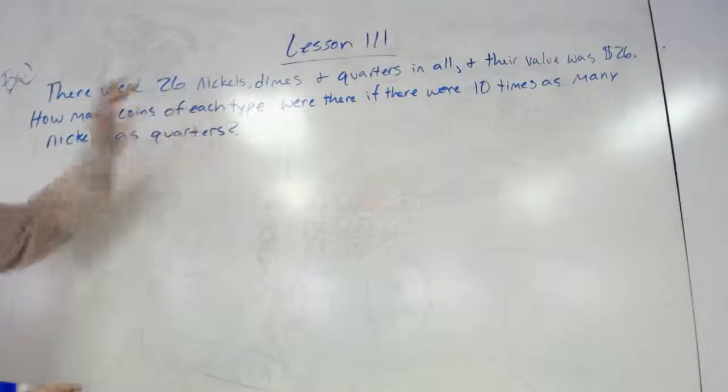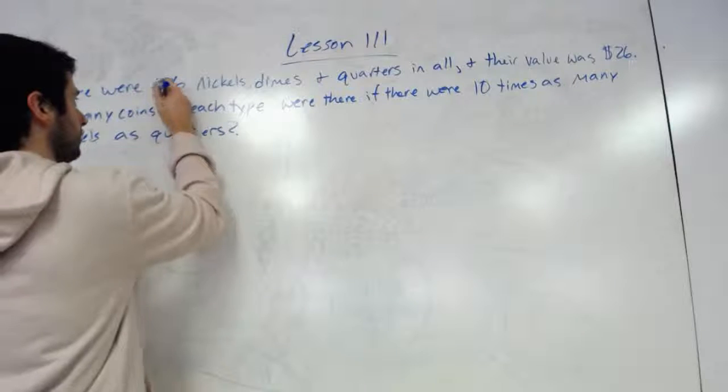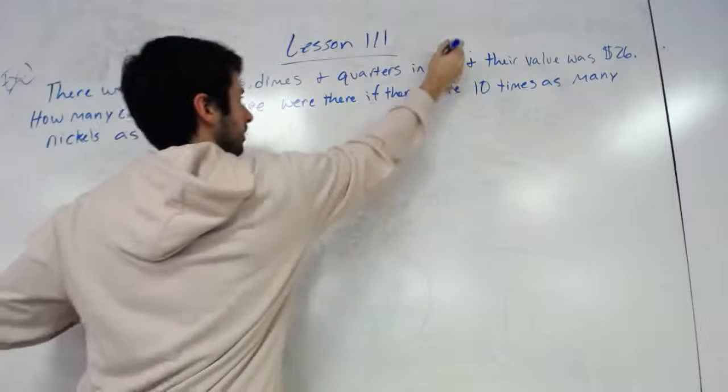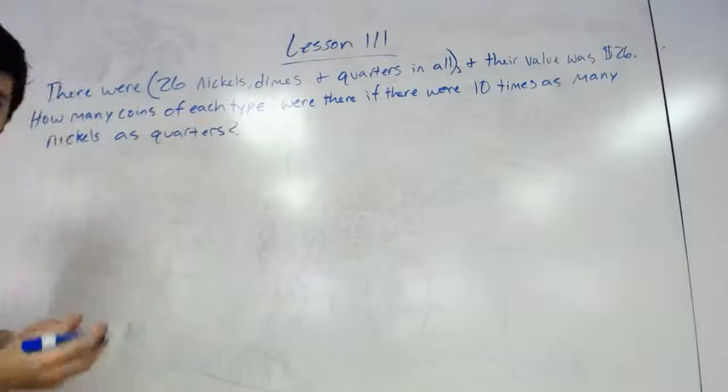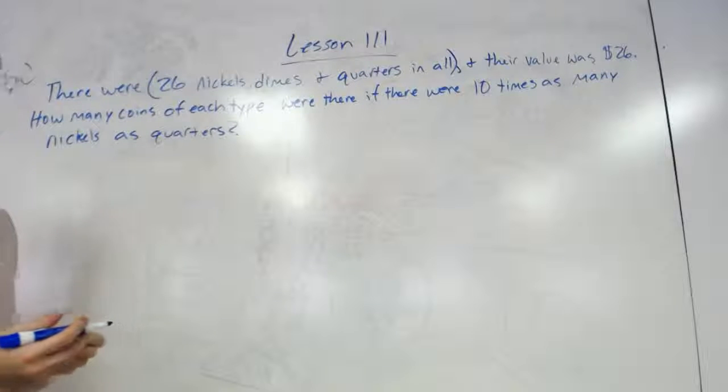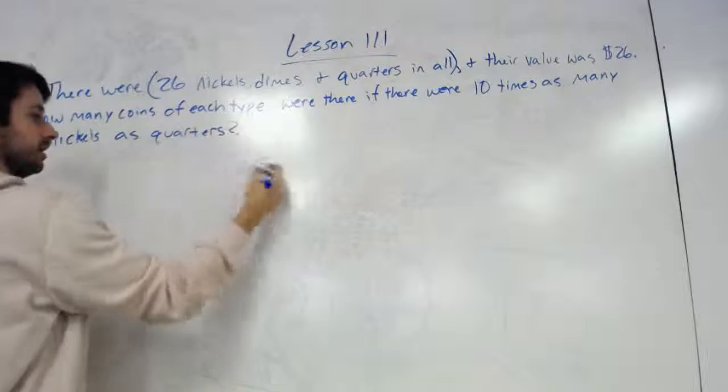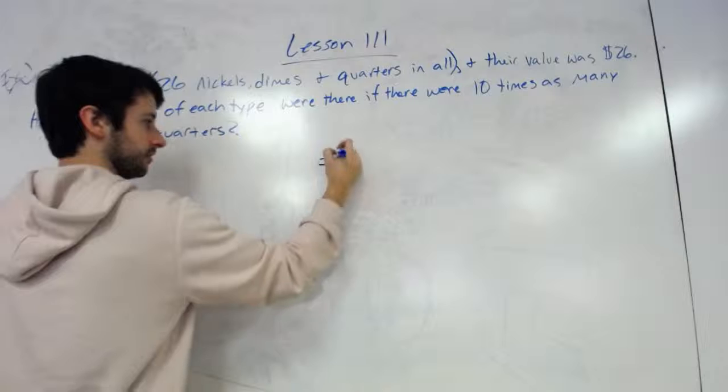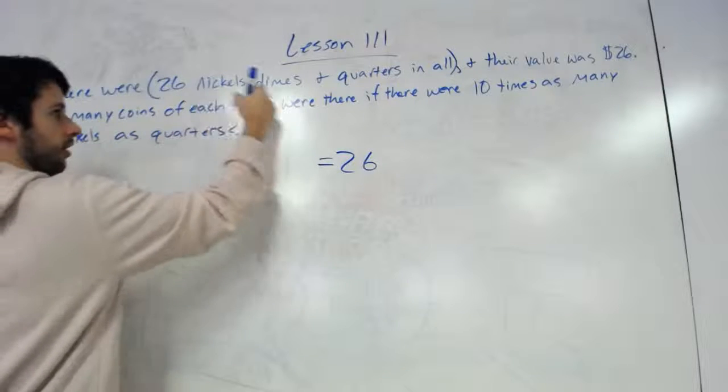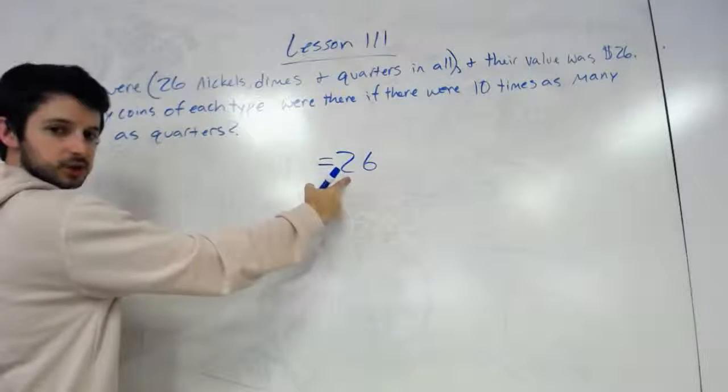How could we write that as a statement of equality? Well, we could say the total sum of all three of these is 26. We have 26 coins.